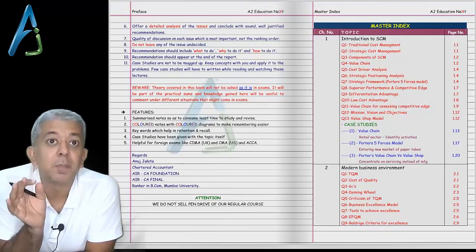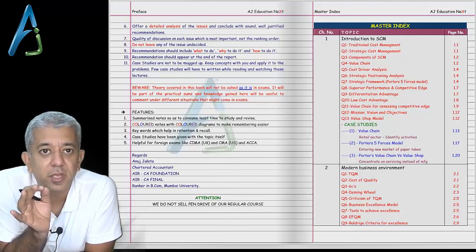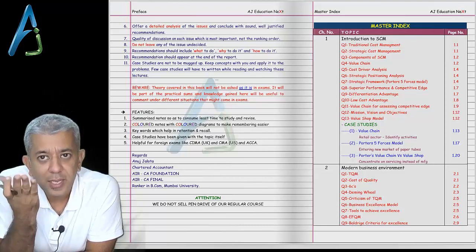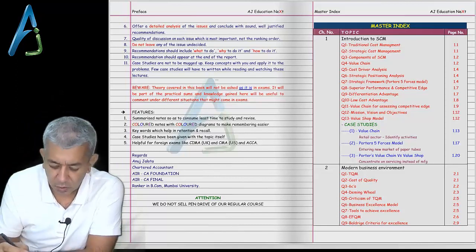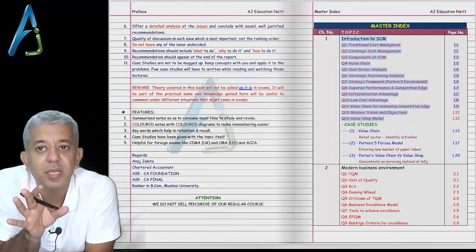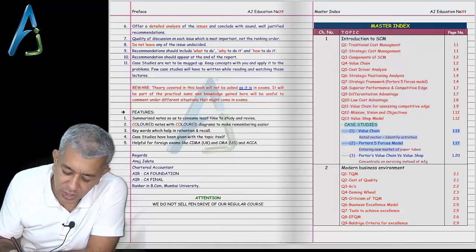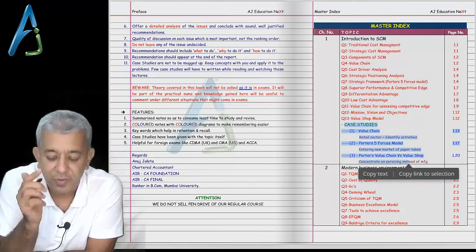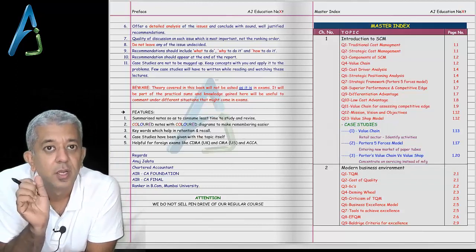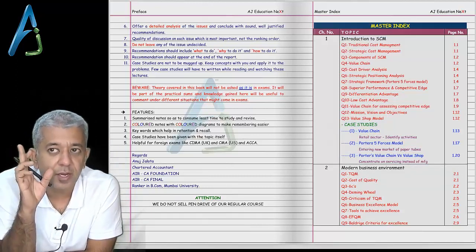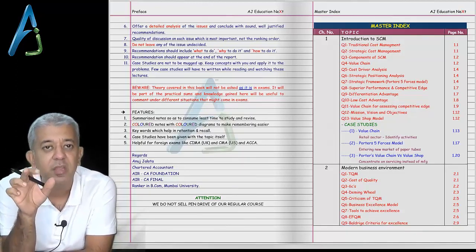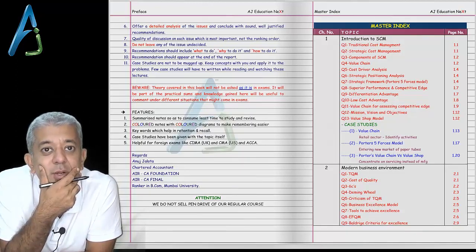After the preface, I have kept a master index. This master index will include all the questions that I have covered in the entire book. For example, in chapter number one we have 13 questions, so each and everything is listed there. Apart from that, towards the end, whichever case studies are there, I have written every case study along with which industry it belongs to and what concept is involved. So if in future you try to recall a case study on restaurants, you will be able to trace those case studies very fast from this master index.